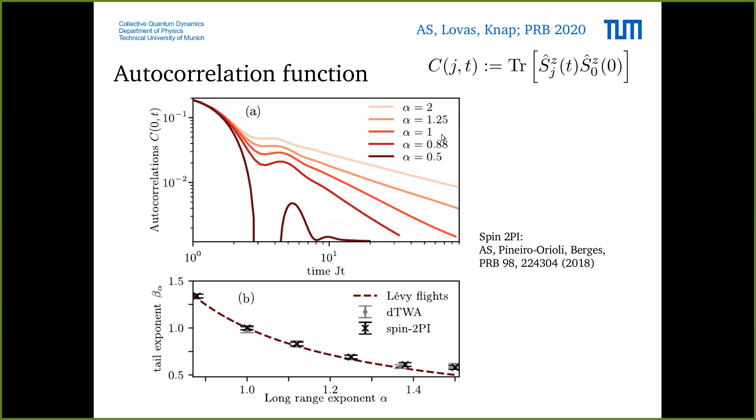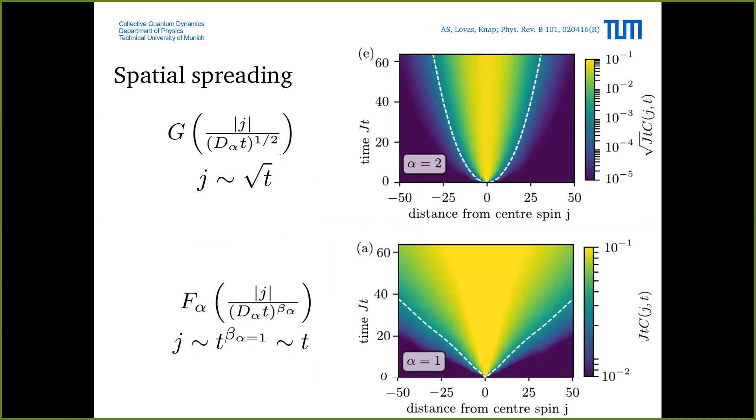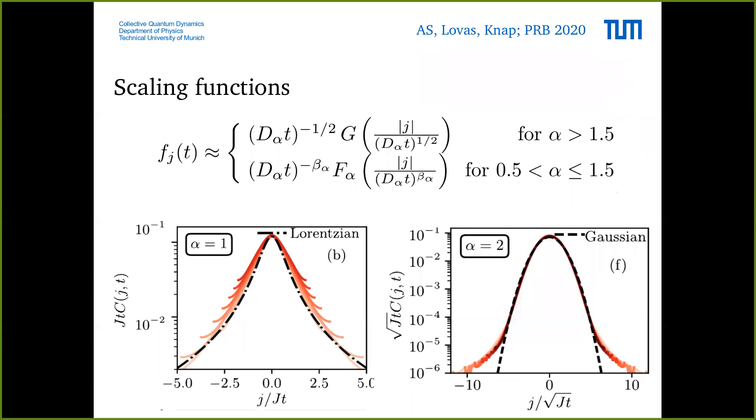More than the autocorrelation function is to look at the full spatial correlation function. For short-range interactions you see a sort of Gaussian spreading but for alpha equals one it looks more like a ballistic spreading, but it's not really ballistic transport because the correlation function is not peaks which propagate but it's still a continuous distribution which is the one predicted from Levy flights. To check that this distribution is actually as expected from Levy flights we looked at the scaling function. You rescale the correlation function with the appropriate power of time and also space, and then slices at different times collapse. We find a very nice scaling collapse according to the prediction from Levy flight and the scaling function also agrees with the prediction.